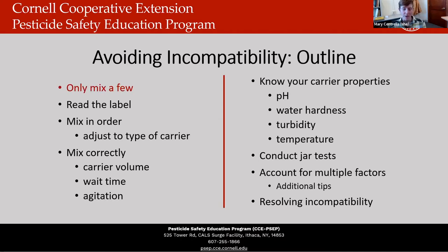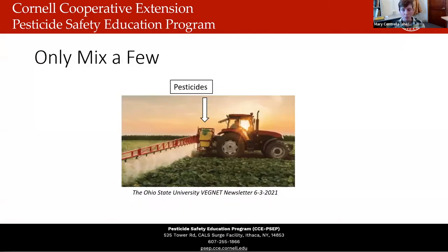The first way to avoid compatibility issues is to only mix a few products. Mixing fewer products reduces your chance of incompatibility. To understand why, let's talk about what goes into your tank. You're putting pesticides in — herbicides, fungicides, insecticides. Depending on the pesticide formulation, they might respond differently to things like temperature, water, pH, storage conditions, mixing in the carrier, and mixing with other pesticide products.